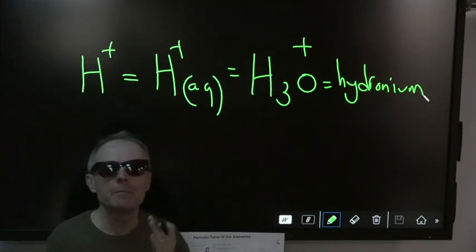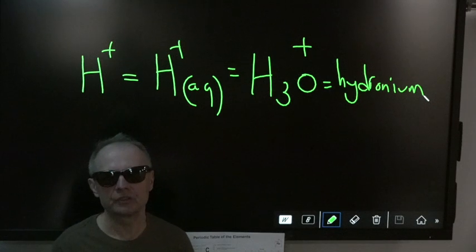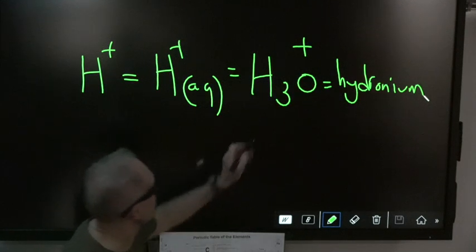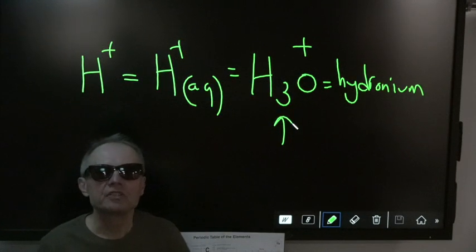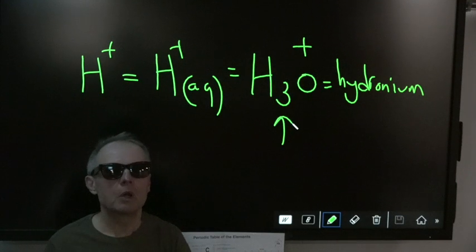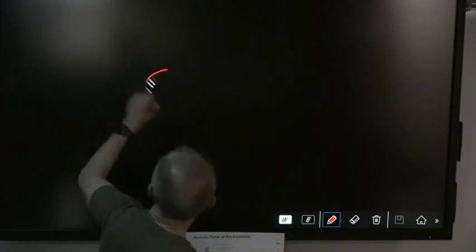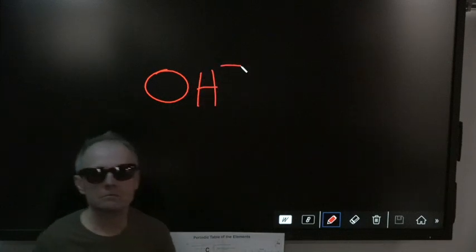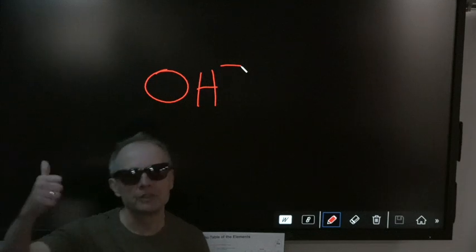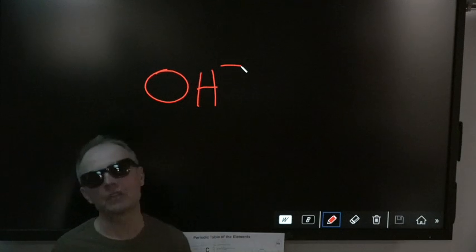Whenever you see H3O plus, that means it's an acid. That's the Arrhenius definition of an acid: a solution which yields H plus ions — but we know H plus ions are really hydronium. What he said about bases is even easier: a base is a solution which yields OH minus, which is hydroxide, in solution. So Arrhenius' definition of an acid yields H plus ions in solution; his definition of a base yields OH minus ions in solution.